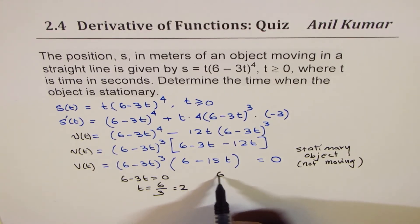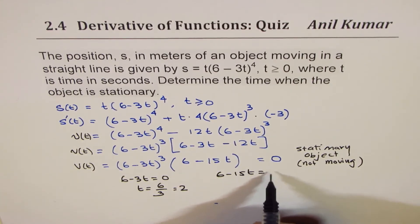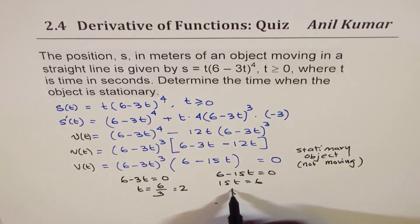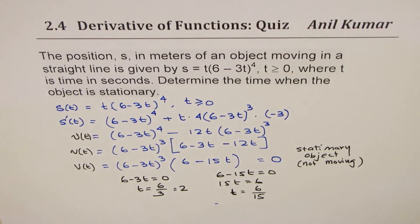The other one to be zero is 6 minus 15t equals 0, means 15t equals 6. So t equals 6 over 15. So these are the two times.